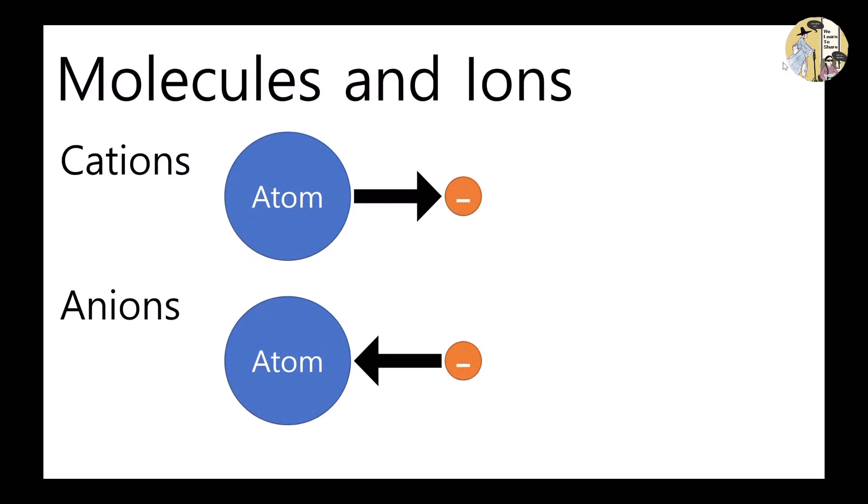However, many transition and post-transition metals can form more than one cation and they do not follow the noble gas structures. Two or more atoms can form polyatomic ions. Except the two cations, the ammonium ion and the mercury ion, polyatomic ions are all anions. A majority of them are oxoanions and contain oxygen atoms.